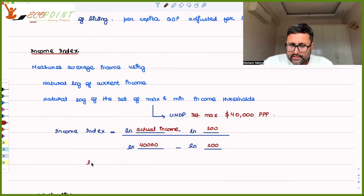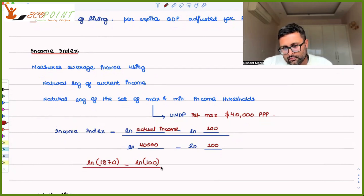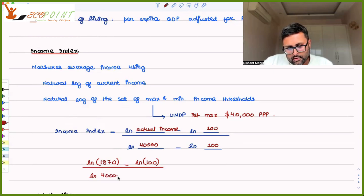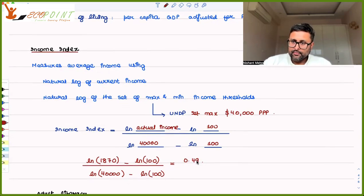For example, if the per capita income of my country is $1,870, we calculate: log(1870) minus log(100), divided by log(40,000) minus log(100). Once you calculate this, the income index comes out to be 0.49. So we find the income index, health index, and education index separately, then take their simple average.